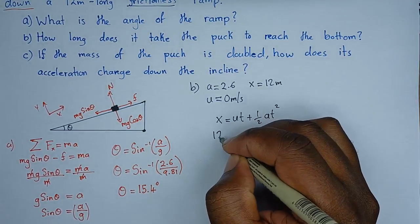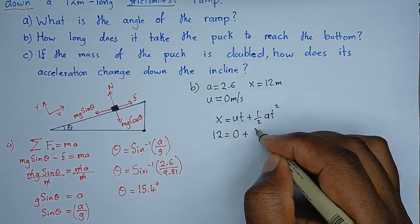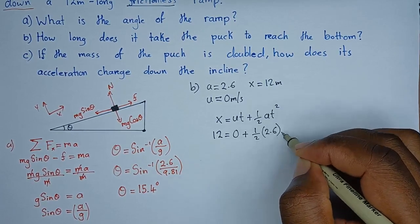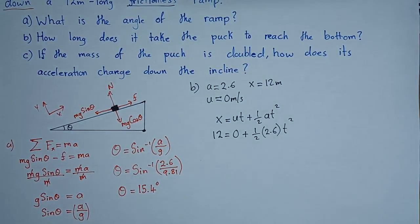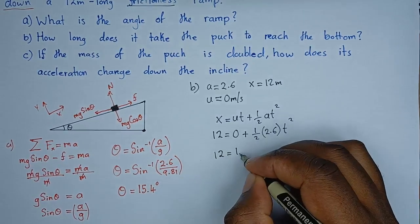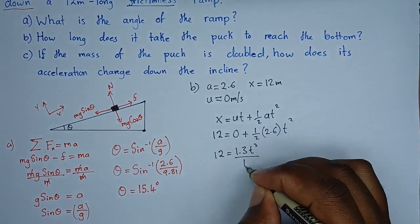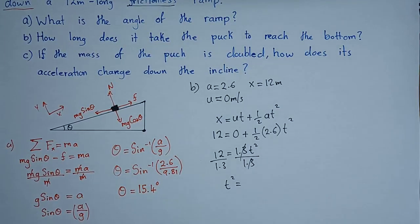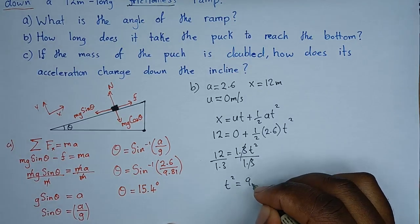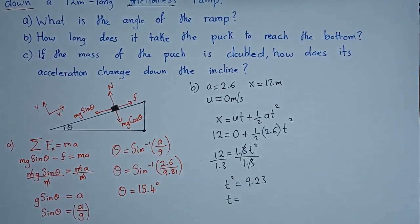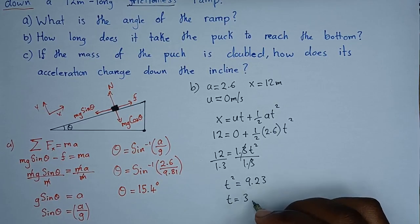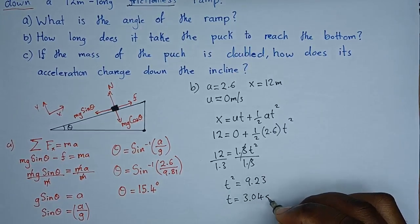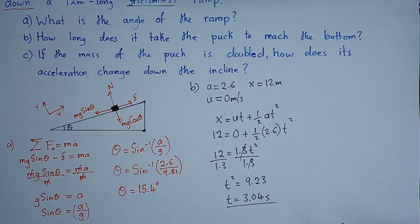So, the formula we're going to use will be x equals u t plus half a t squared. So, we know that x is 12. If we multiply 2.6 times half, what we get is 1.3. So, here we have 12 equals 1.3 t squared. We divide both sides by 1.3, so that t squared equals 12 divided by 1.3. We get 9.23. And then, if we introduce a square root to both sides, the time is just 3.04 seconds.